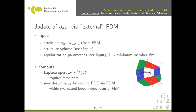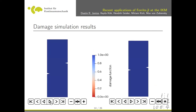Then it loops and produces some results. For example, this double notch problem: you pull it and what you see in red is not the crack but the damaged zone — though with the right parameters it looks like cracks.